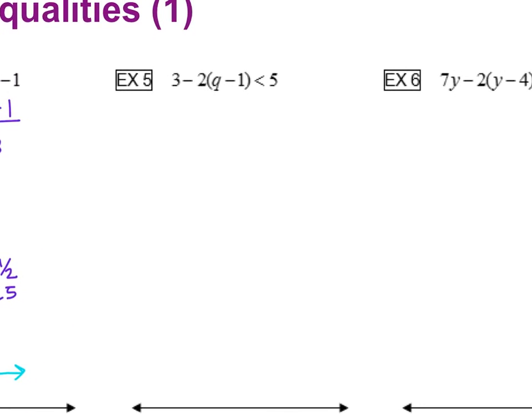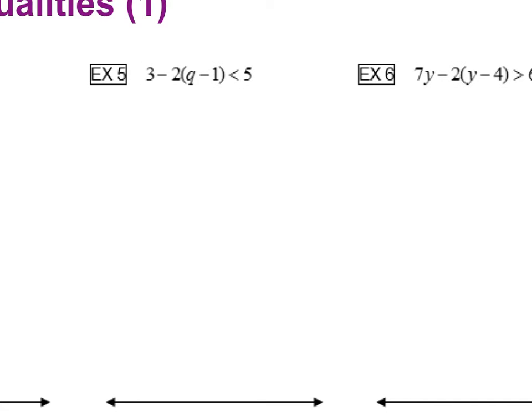All right. Next example. Again, parentheses, so that's our starting point. One thing you want to notice though, the 3 just gets brought down, but this 2 is negative, so we are distributing a negative 2. So this is going to be negative 2q, negative 2 times negative 1 is positive 2, is less than 5. Combine your like terms, 3 plus 2 is 5, minus 2q is less than 5.